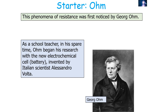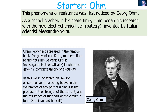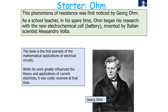The phenomenon of resistance was first noticed by Georges Ohm, a school teacher who began his research using the new invention of the time — the electrochemical cell or battery, invented by Italian scientist Alessandro Volta. Ohm's work first appeared in his famous book 'The Galvanic Circuit Investigated Mathematically', in which he stated his law: the electromotor force acting between the extremities of any part of a circuit is the product of the strength of the current and the resistance of the circuit — a term Ohm himself invented.